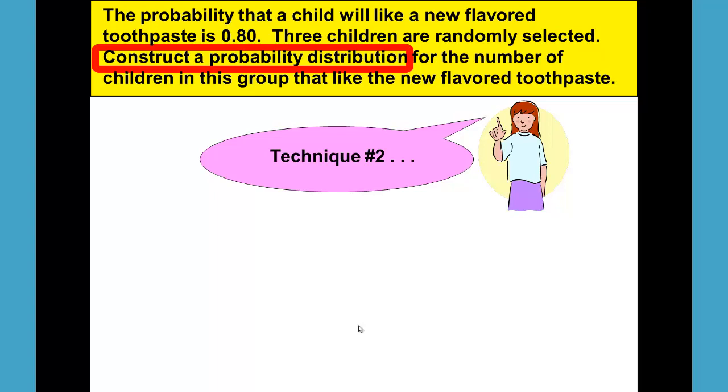Let's reread the problem to refresh our mind. The probability that a child will like a new flavored toothpaste is 0.80. Three children are randomly selected. Construct a probability distribution for the number of children in this group that like the new flavored toothpaste.